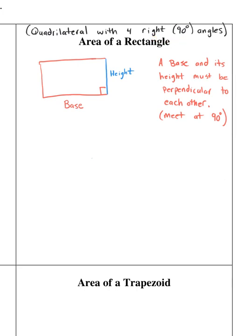The base and the height of a rectangle must be perpendicular to each other. That's what this little box is marking for. So a base and a height must be perpendicular to each other.